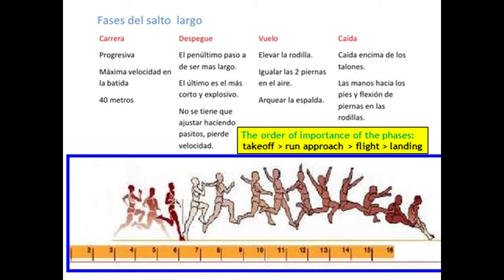In summary, the order of importance of the phases of the jump is as follows: in first place, the takeoff phase; in second place, the acceleration phase; in third place, the flight phase; and lastly, the landing phase.